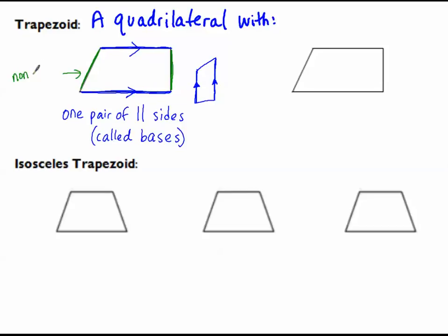The non-parallel sides are called legs. Bases are parallel, legs are not parallel. Because there's a pair of parallel sides, there's a property that we know will exist in the trapezoid.